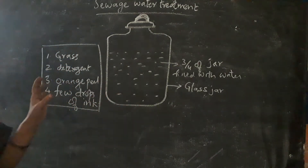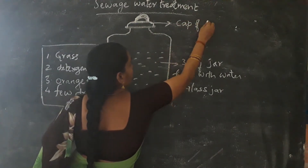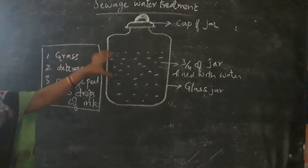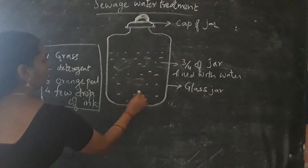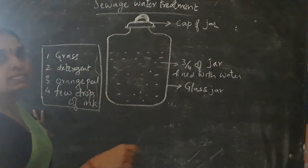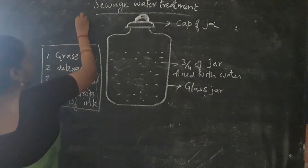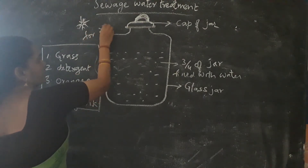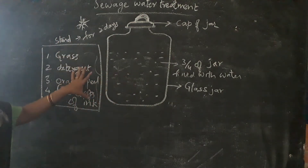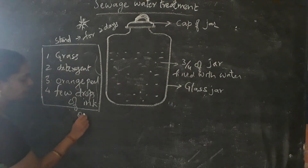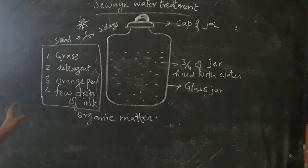After filling the jar with three-fourths of water and the dirty organic matter, you should cap the jar. Put the lid over the jar and mix all these components in the water. Then let it stand for two days in the sunlight. The organic matter dissolves in the water and it is kept in the sunlight for two days.